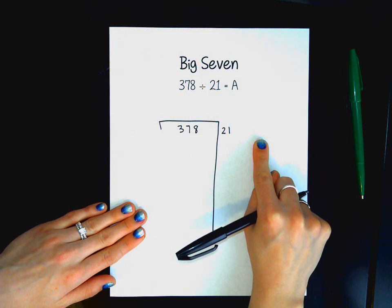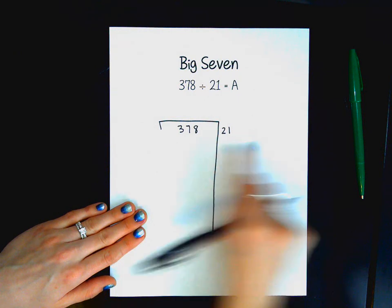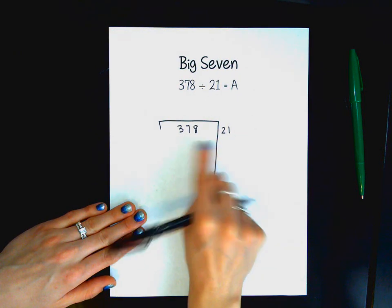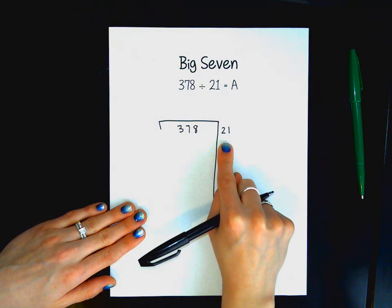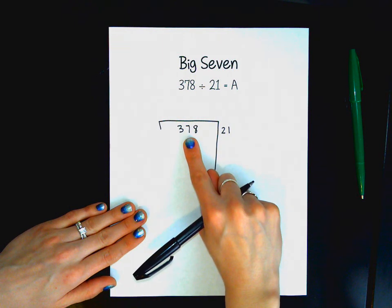So this strategy, like I said, allows students to build on their current knowledge of multiplication and they get to chunk away at their larger number. So when I'm looking at this, I'm going to be using multiplication to help me get this number down to zero.